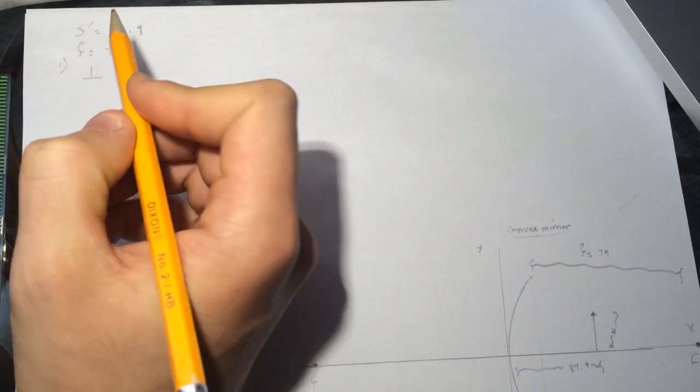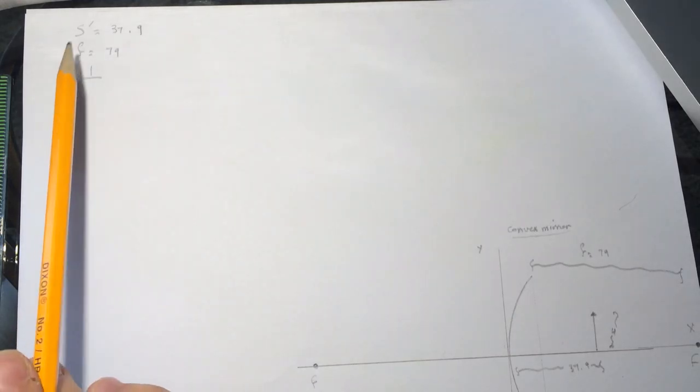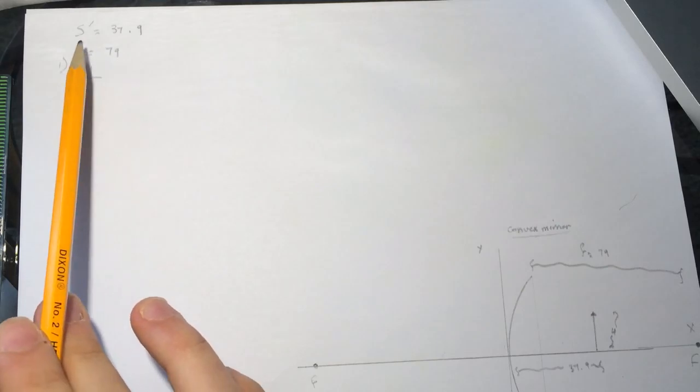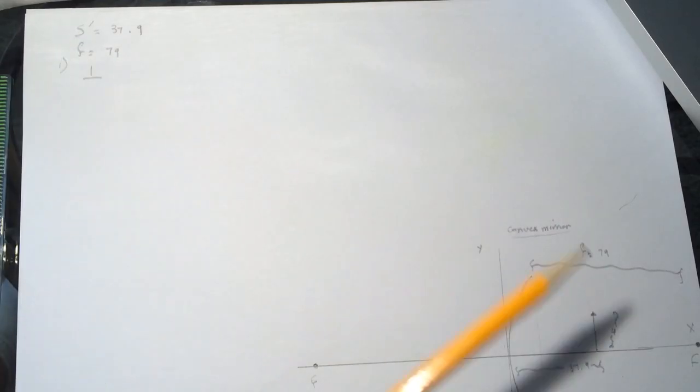So let's use the equation. Now if you look at this, you can see that both the focal point and the S prime is in the same side. So both of them will have the same sign.